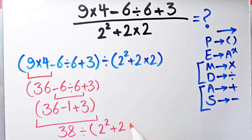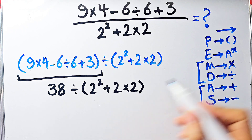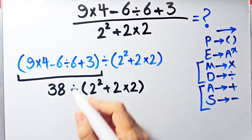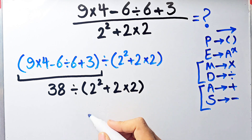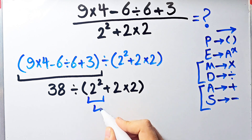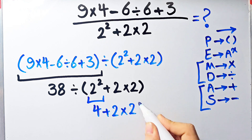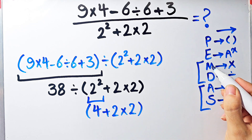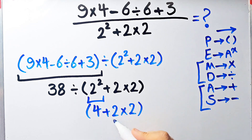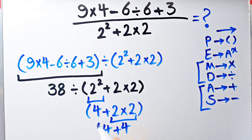Again we simplify the parentheses. Inside these parentheses we have exponent, addition, and multiplication. First we simplify the exponent: 2 to the power of 2 equals 4. Now we have 4 plus 2 times 2 inside the parentheses. We simplify the multiplication first because multiplication has higher priority than addition: 2 times 2 equals 4. Now we have 4 plus 4.